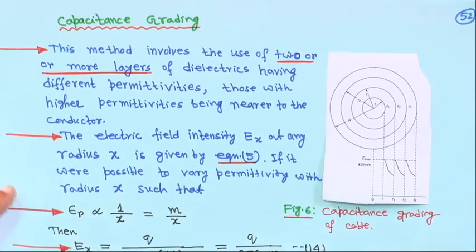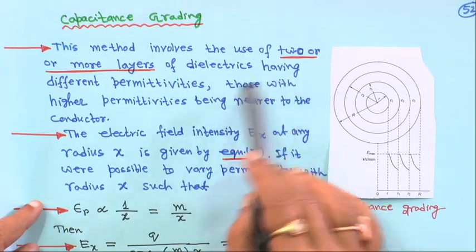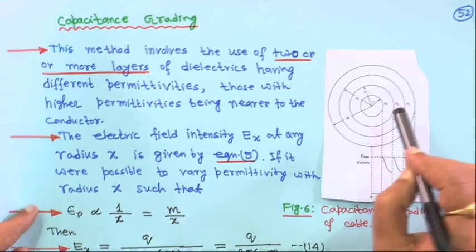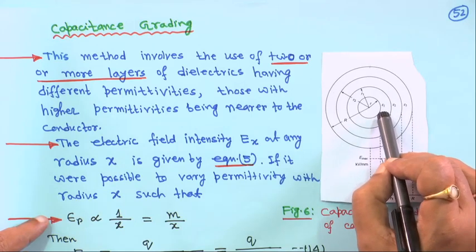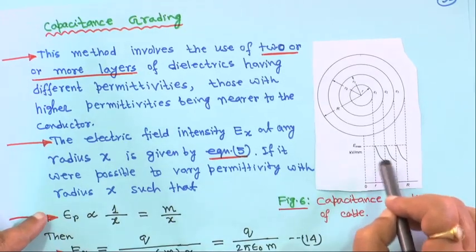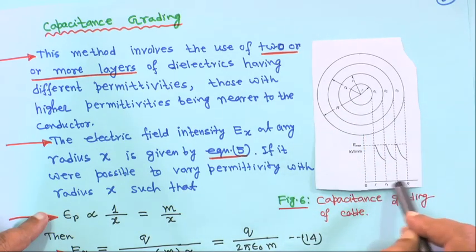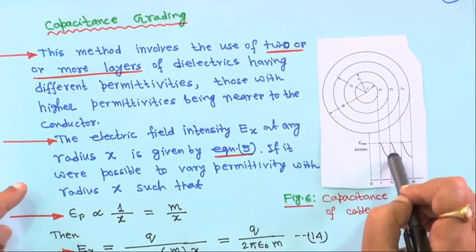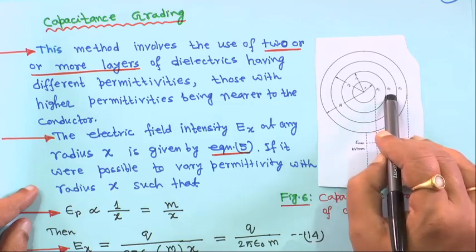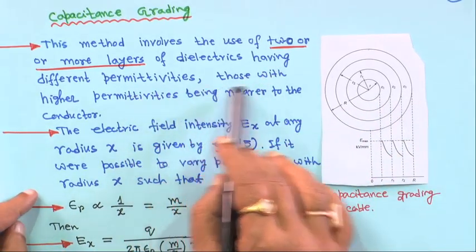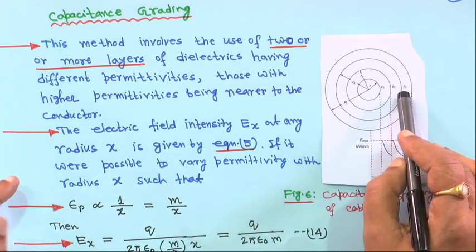Suppose you have a core conductor. Two or more layers of dielectrics have different permittivities. In the diagram, three insulating materials are shown having permittivities ε₁, ε₂, and ε₃. The electric field characteristic is plotted from 0 to r (conductor radius), then r to R₁, R₁ to R₂, and R₂ to capital R.